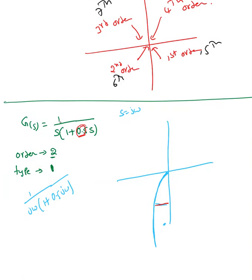The next example is 1 over s times (1+0.5s). The order is two and the type is one. Type one gives you the starting point here, and order two gives you the end point there — second order. So the graph is going to look something like this, meeting at infinity.